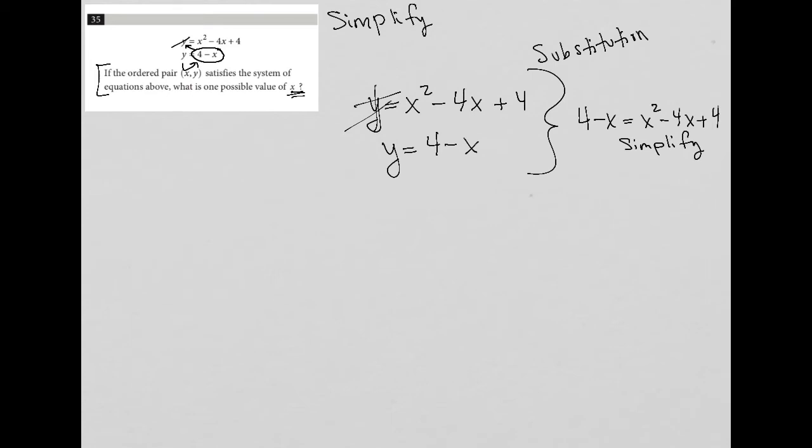Now we have to simplify. We have some like terms. I have this negative X here. So just to give myself some more space, I'm going to write this down again. Four minus X equals X squared minus four X plus four. I am going to subtract four from both sides and I am going to add X to both sides.